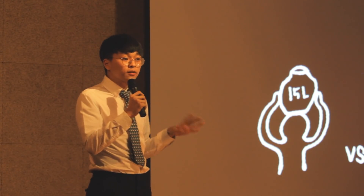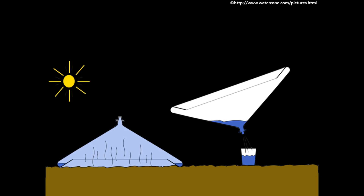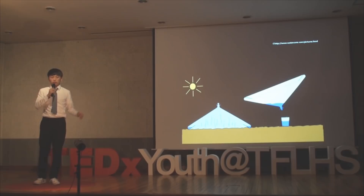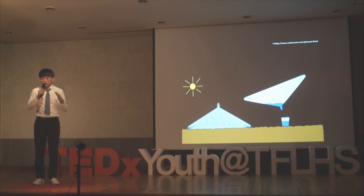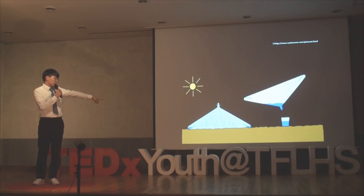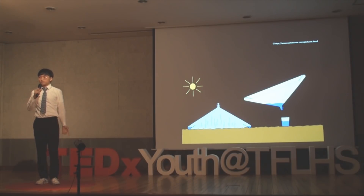Similar, but not the same as the Q-drum, the Water Cone can generate clean water with a simple science principle. Once you pour water on the ground, it evaporates, taking living bacteria and things harmful to your health with it. As the vapor reaches the cone of the Water Cone, it changes into droplets — and then you can collect those droplets as clean water.